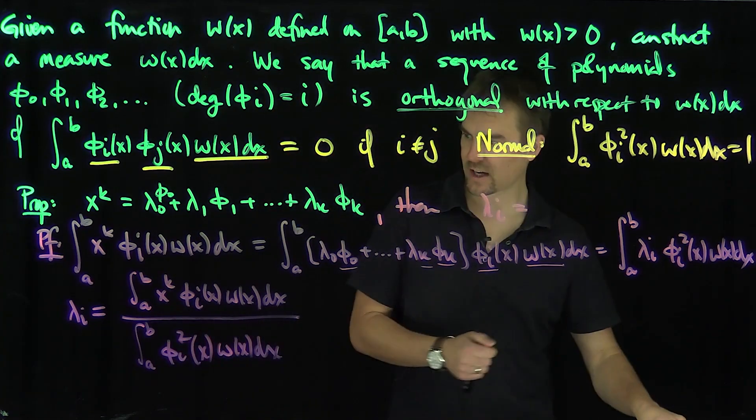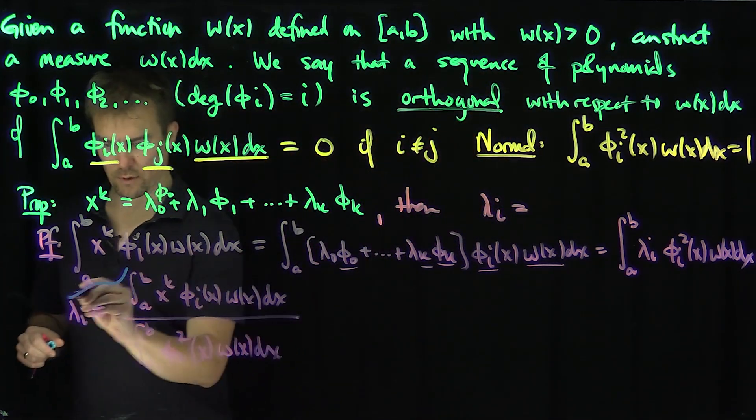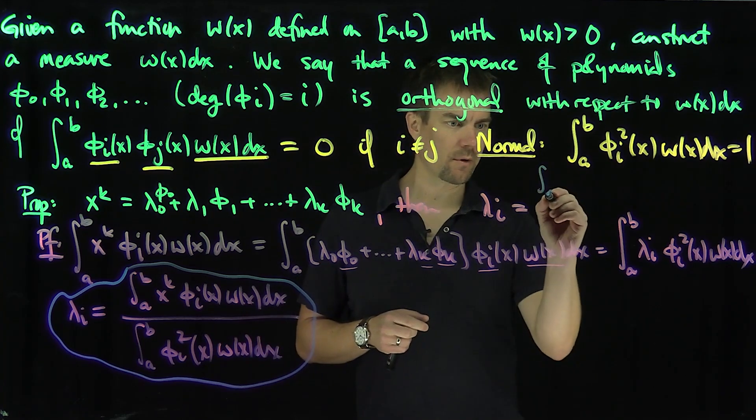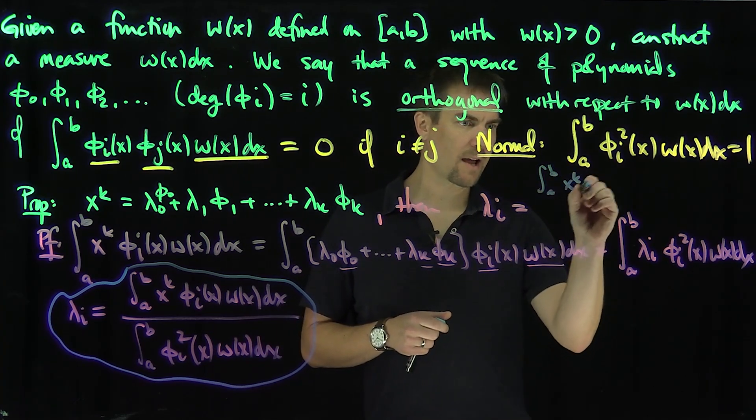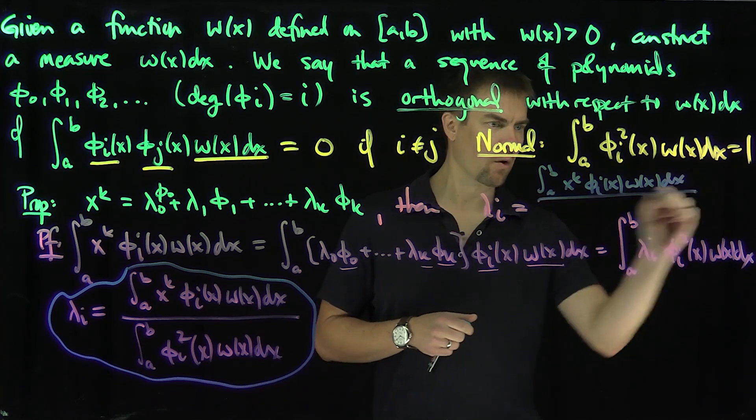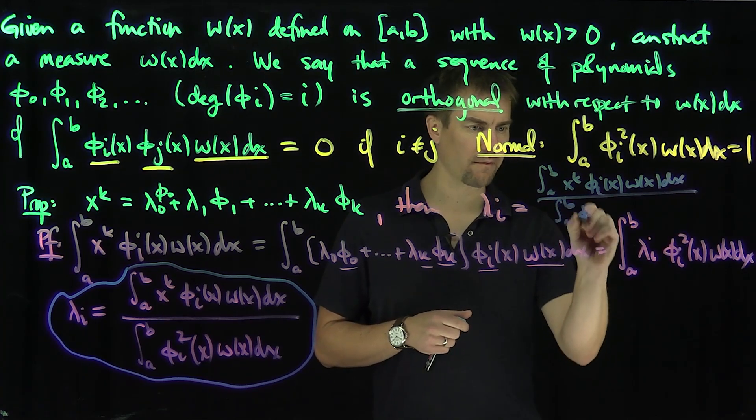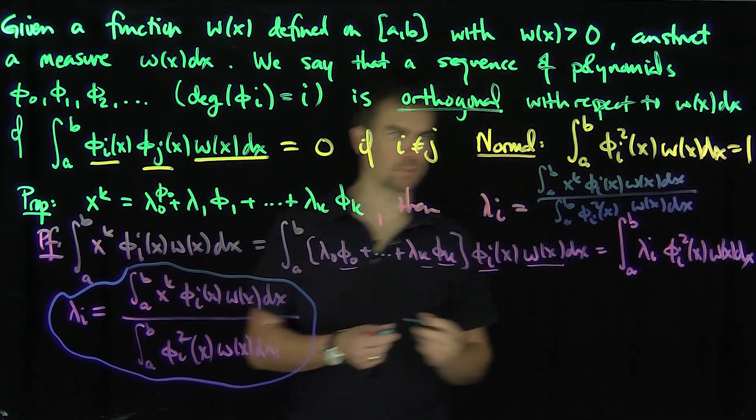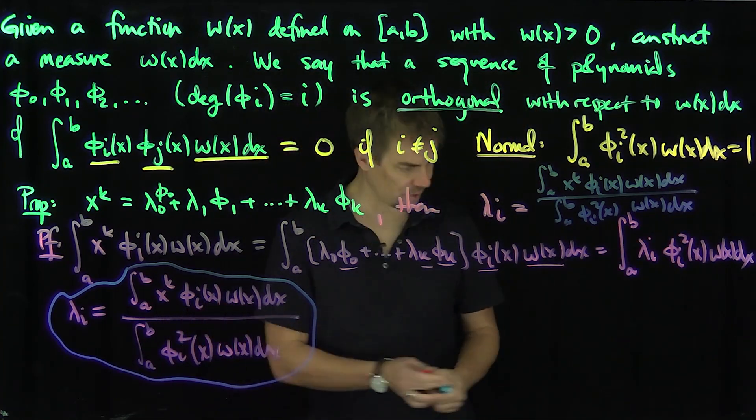So this formula is exactly what we're going to plug in. This is our formula for those coefficients λᵢ: the integral from a to b of x^k φᵢ(x)w(x)dx over the integral from a to b of φᵢ²(x)w(x)dx. Sometimes you'll hear these called the Stieltjes measures.